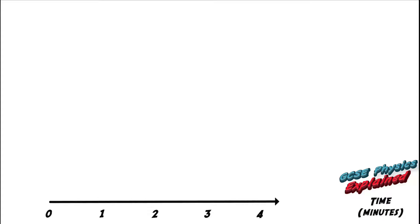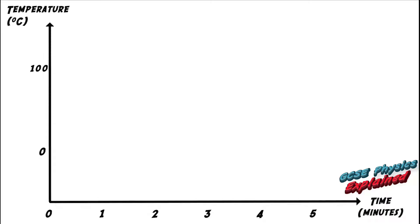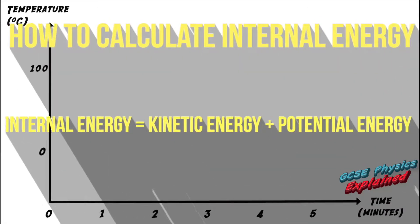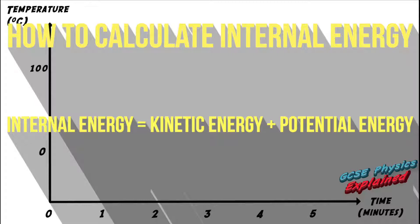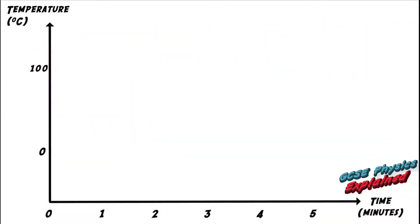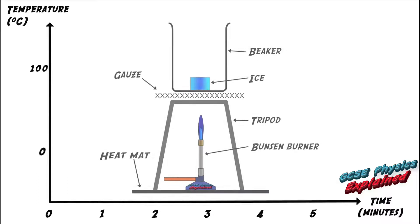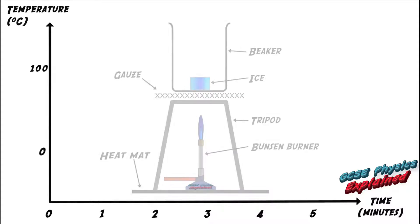I've created a temperature-time graph so we can look at the internal energy of a substance as it gets heated. Remember, internal energy is made up of two components — kinetic energy and potential energy — so we need to pay attention to what happens to them throughout this animation. Imagine you place an ice cube into a beaker and heat it up with a Bunsen burner. Let's look at the temperature-time graph and I'll explain each part.